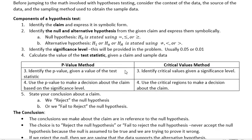We always want to identify the significance level, which will be provided for you — that's not something you have to decide. Usually 0.05 or 0.01 are the significance levels we'll be looking at. We have to be able to calculate the value of the test statistic. Then we can either use the p-value method, where we identify the p-value and compare it to the significance level, or the critical values method, where we identify the critical values and use the critical regions to make a decision about the claim.